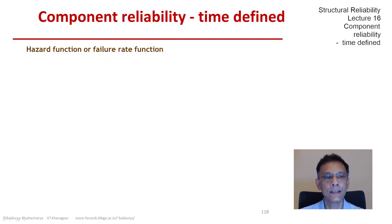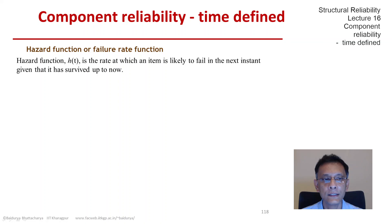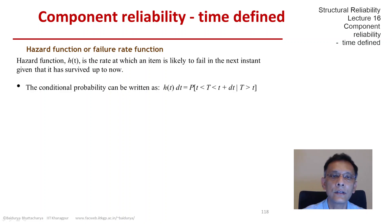The hazard function is the probability that an item will fail in the next instant, given that it has survived up to now. Expressing that as a conditional probability, it looks like P of the random time to failure capital T being between small t and t plus dt, given that capital T is greater than t. This is the hazard function times the small increment of time, so h(t)dt is a conditional probability.